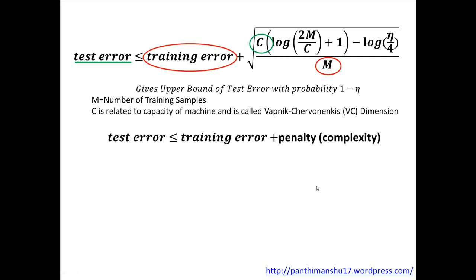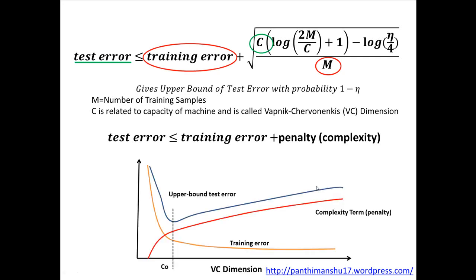If we plot training error, complexity term, and test error with VC dimension for a fixed training sample size, it can be shown that as we increase VC dimension, training error will reduce as shown in orange plot, while penalty term shown in red increases with VC dimension. Upper bound on test error shown in blue first decreases, and after a value of VC dimension shown as C0, it increases.